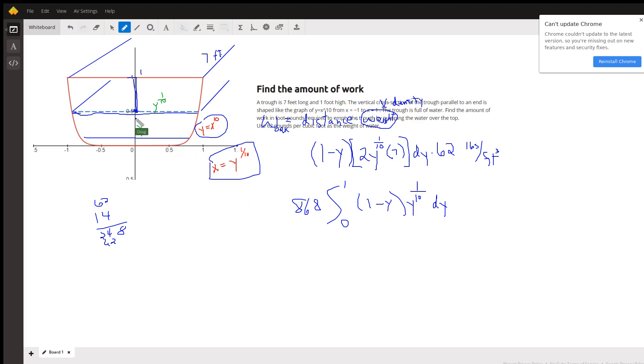That means for each y from zero to one, this distance right here is the 10th root of whatever that y is. Since this is an even function, this distance also will be that same distance, y to the 1/10th.